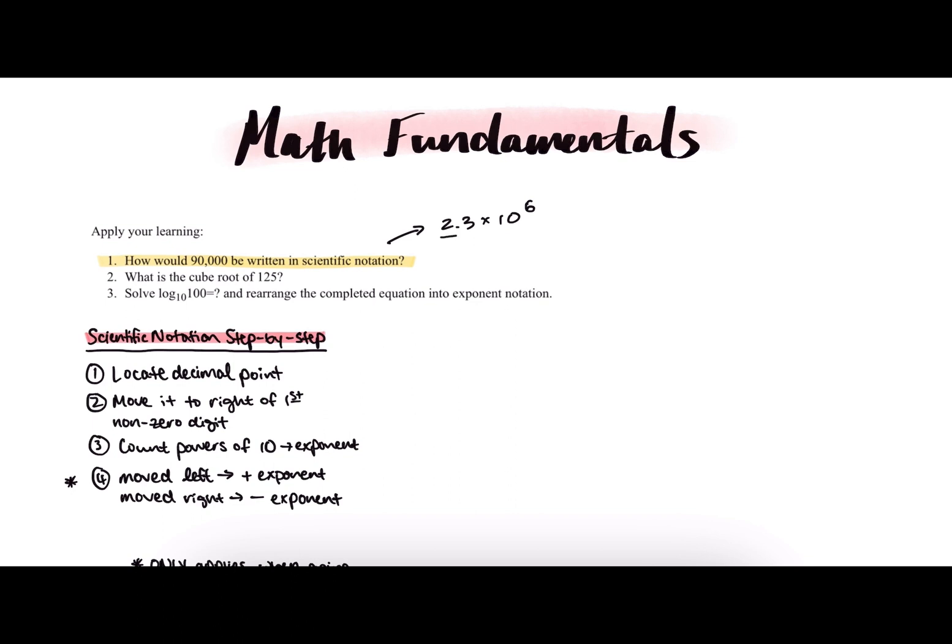So 2.3 times 10 to the 6th is actually a really big number because it has 6 powers of 10. But how can we take a number in standard notation, such as 90,000, and convert it into scientific notation?